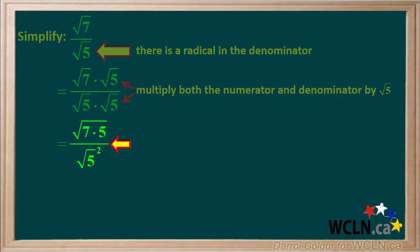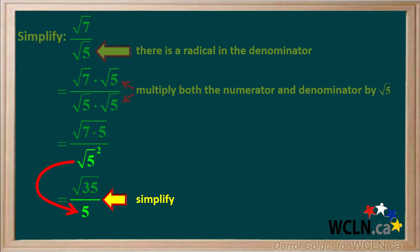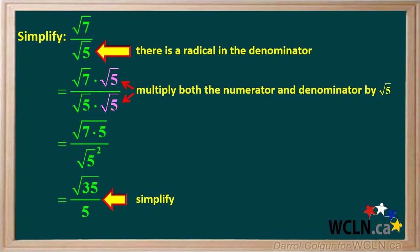Now we simplify. The square root of 7 times 5 is the square root of 35, and the square root of 5 squared is just 5. So our final answer is the square root of 35 over 5. The square root of 35 cannot be simplified further and there is no longer a radical in the denominator. Here is the whole solution to this problem.